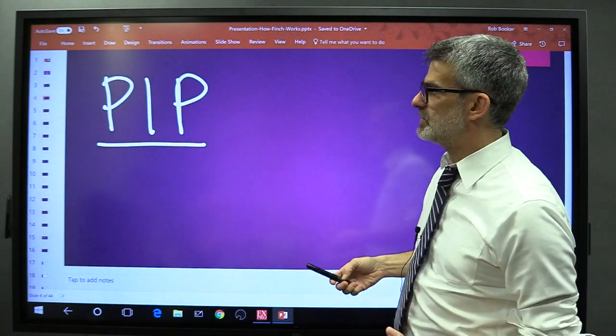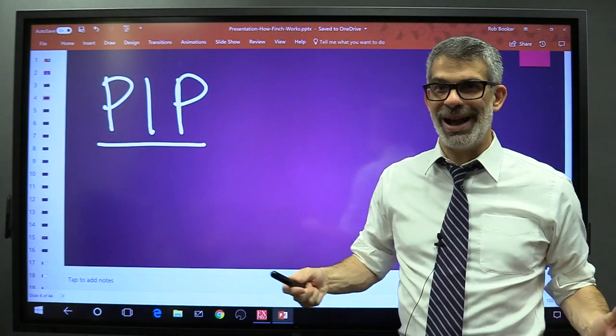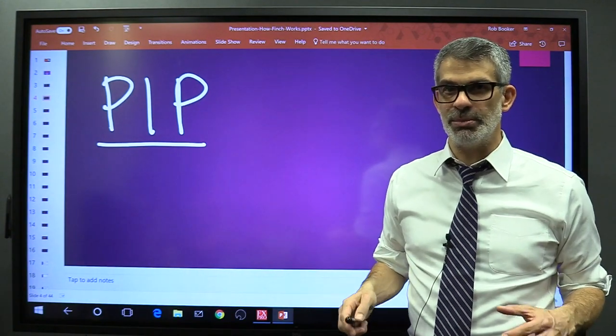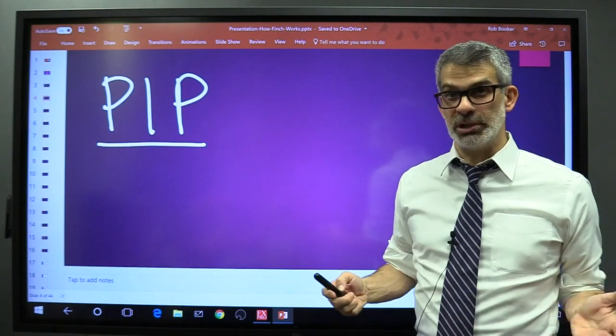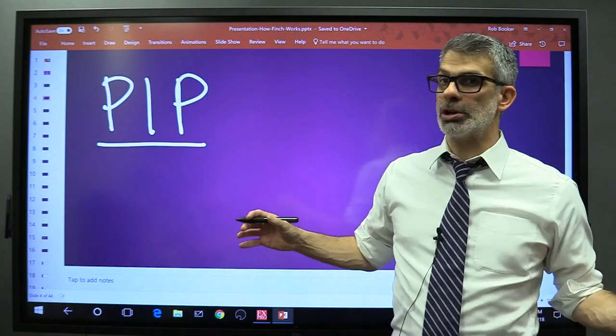A pip is the basic unit of measurement or value when a currency pair moves. This is probably the greatest source of confusion with traders all across the globe.